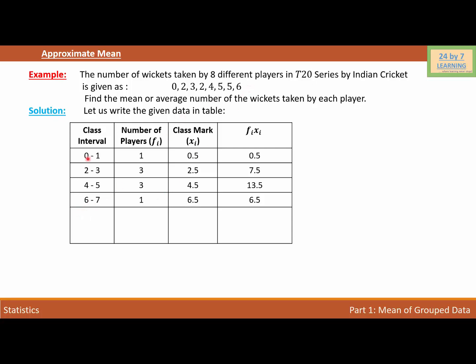The class mark is basically the average of the class interval. So for 0 to 1: (0+1)/2 = 0.5. In the same way, for 2 to 3: (2+3)/2 = 2.5.